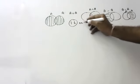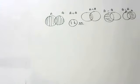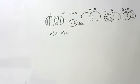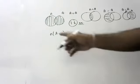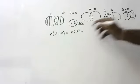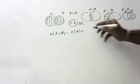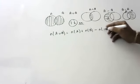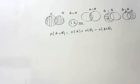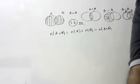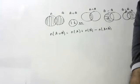Now in Exercise 1.6, you will come across an important formula. N of A union B equals N of A plus N of B minus N of A intersection B. This is the formula we are going to discuss. Are you able to understand this formula? Shall I give an example and show you?